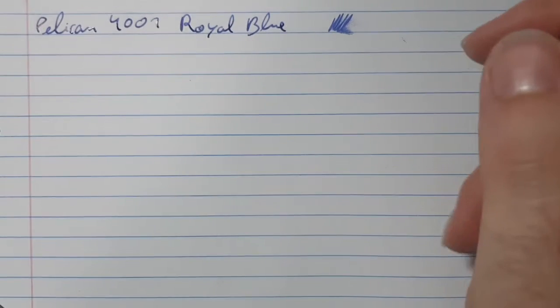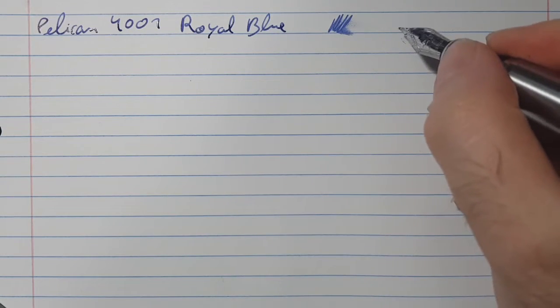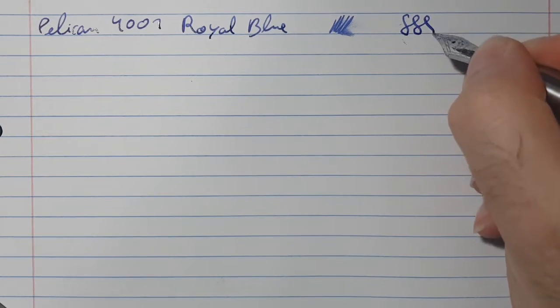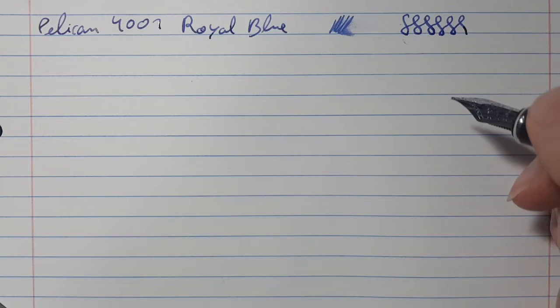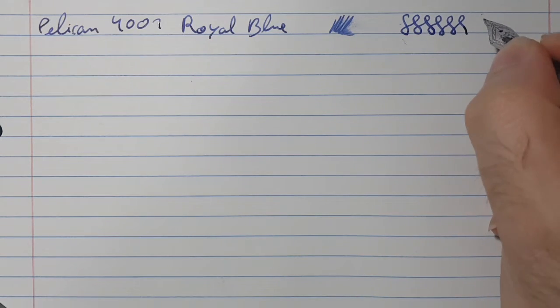It dries relatively quickly and has some color variation. As you can see, the color variation is very noticeable as it changes from a dark blue to an almost black blue.